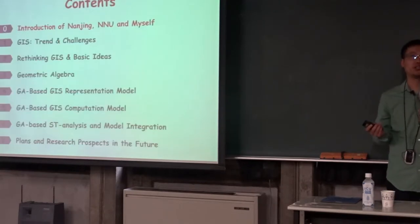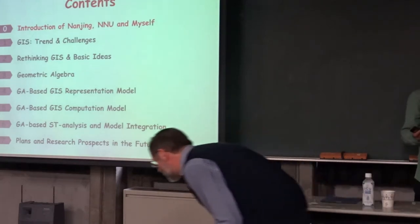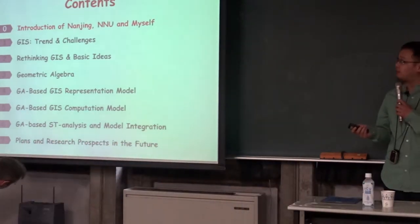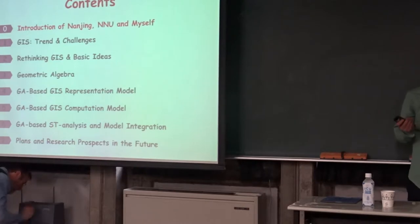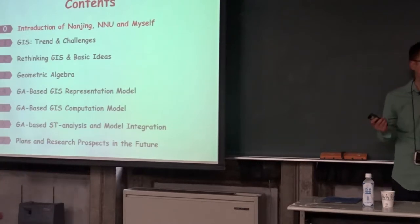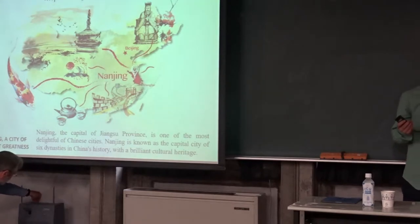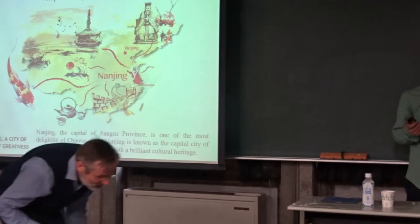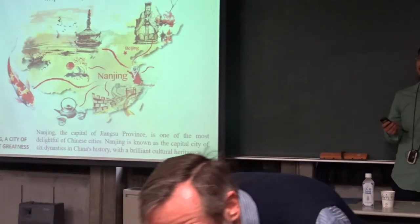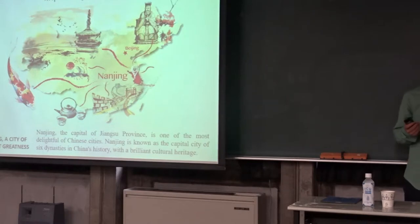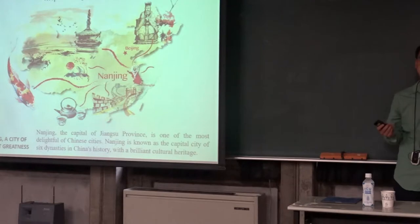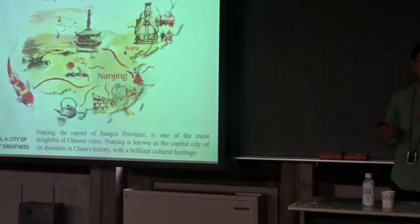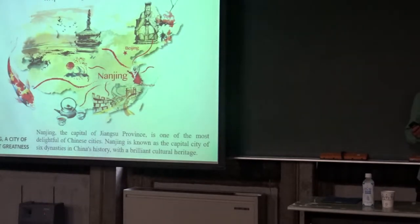I will talk about eight things. As suggested by Professor Heber, I will begin with a brief introduction of Nanjing Normal University and some of my own learning experience. Nanjing is the capital of the province, a city of ancient history. Nanjing is known as the capital city of six dynasties of Chinese history, and there is a saying that no trip to China is complete without experiencing the history and culture of Nanjing.